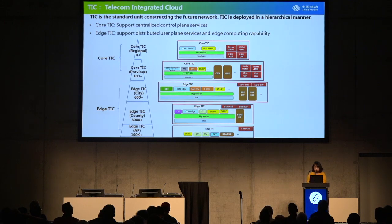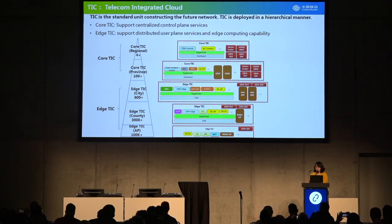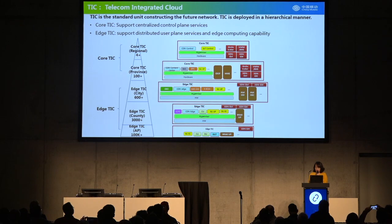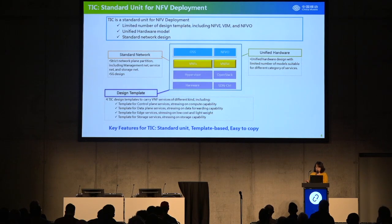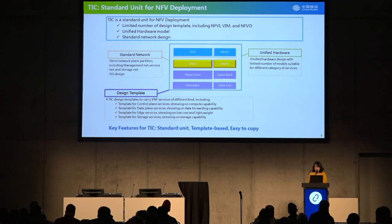The new orchestration is based on an orchestrator like ONAP to provide service online and improve service agility. The future network of China Mobile is constructed as what we call the Telecom Integrated Cloud, TIC. TIC is actually a standard unit to construct the future network. It is deployed in a hierarchical manner, with core TICs staying in the major provinces and districts, and edge TICs distributed to far cities and counties. TIC is a standard unit because it has a limited number of design templates for NFVI, VIM, and NFVO. It has unified hardware models and a standard network design.